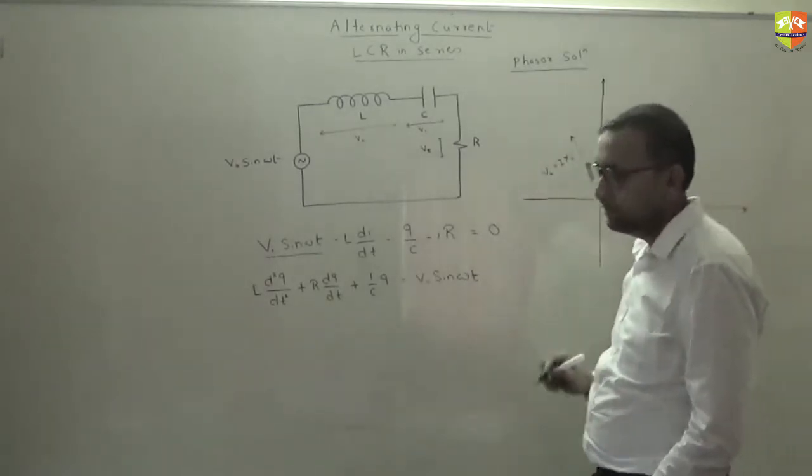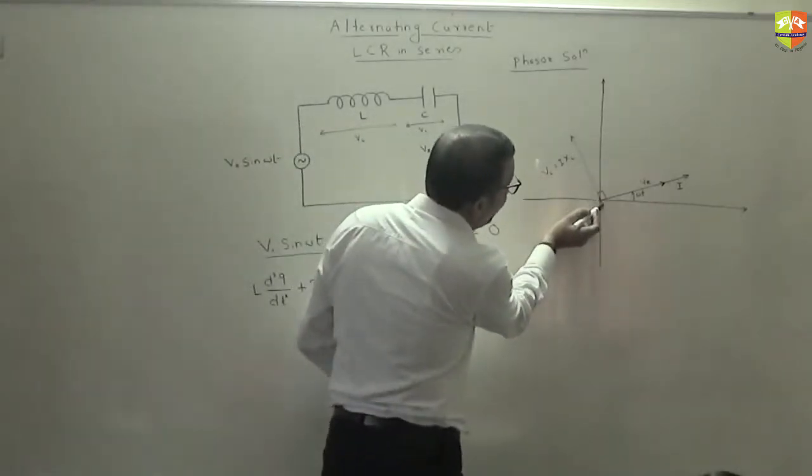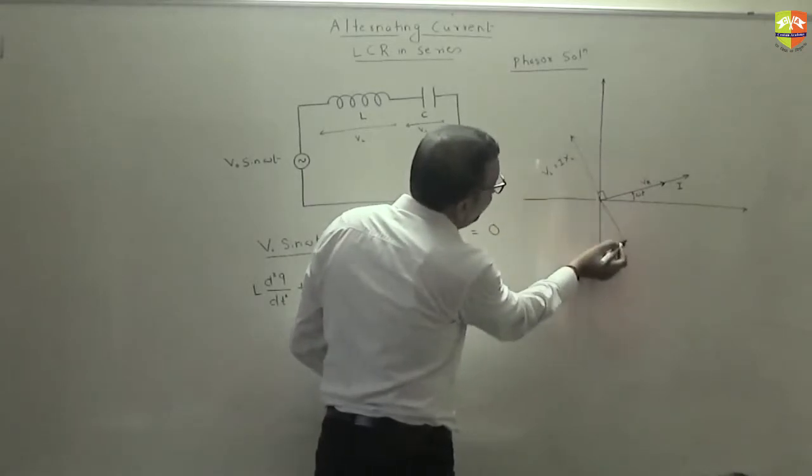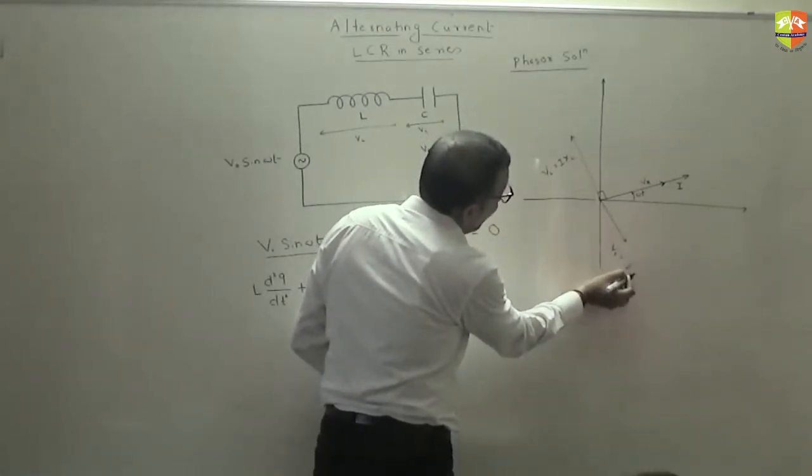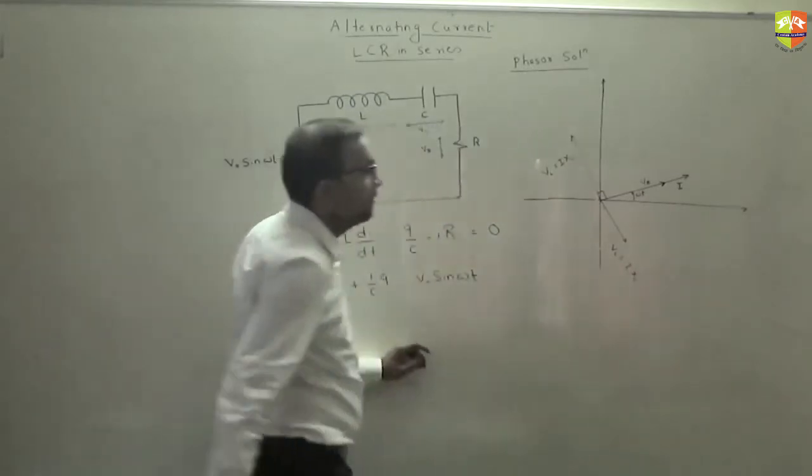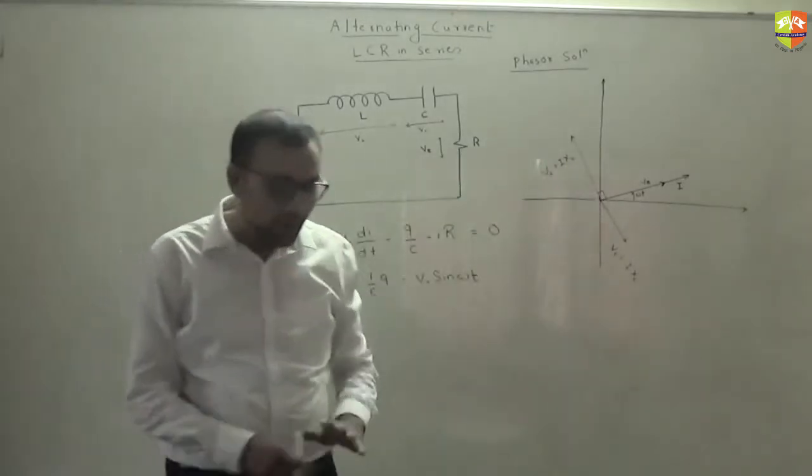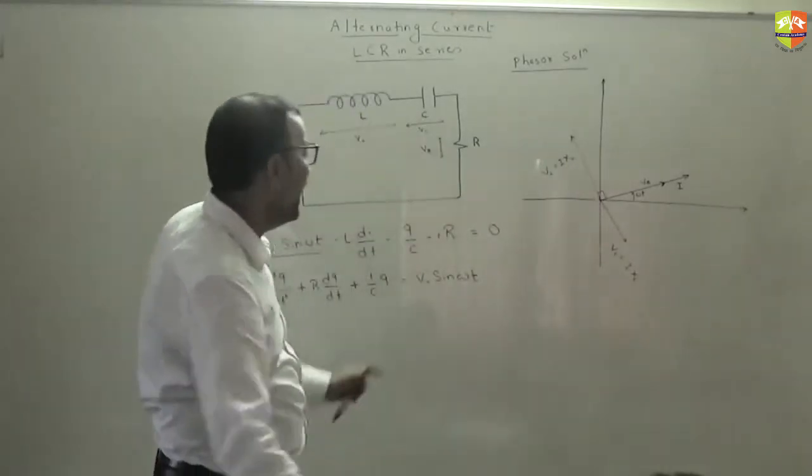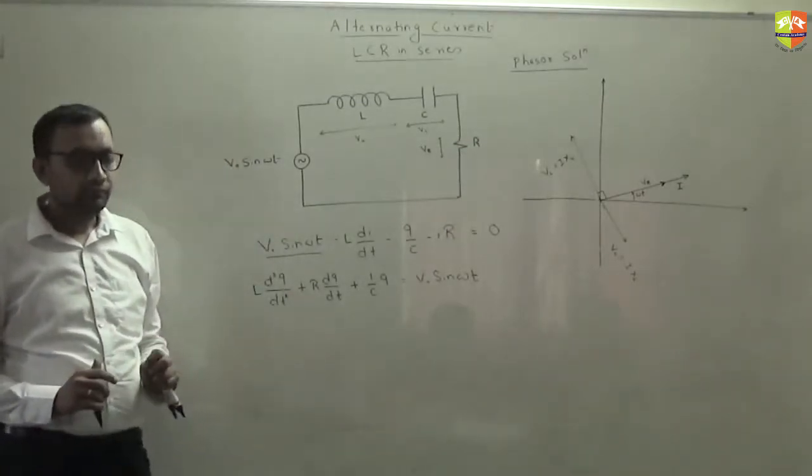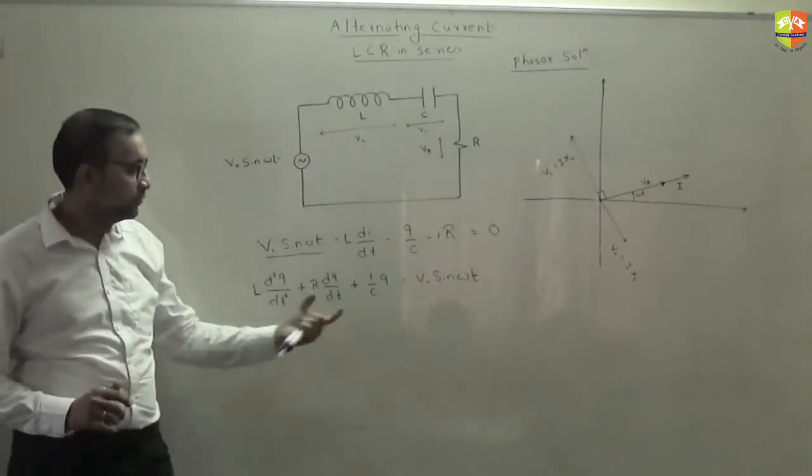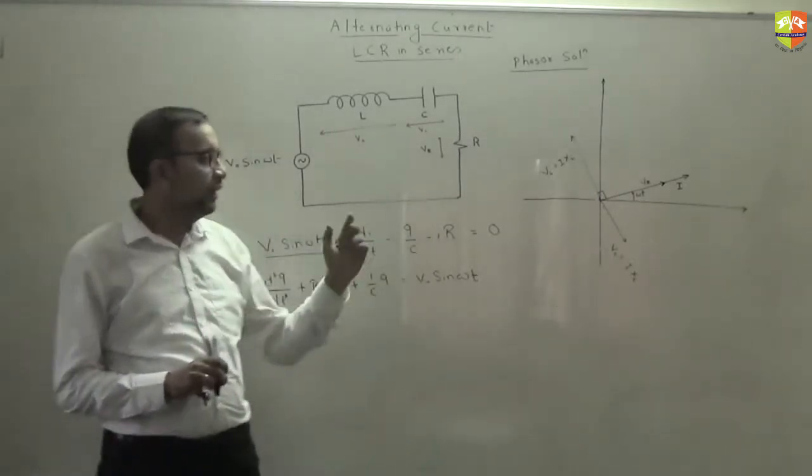What about VC? Where will be the VC? So it will be like this. So will it be in the same line? VC is I into XC. Will this be a straight line? It will be a straight line. Now you have to add all these three. When you add all of these three, you should get this.